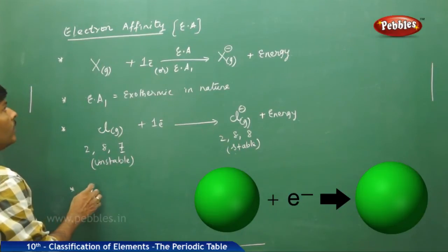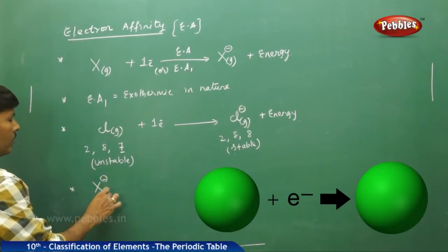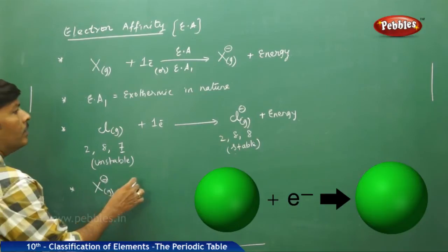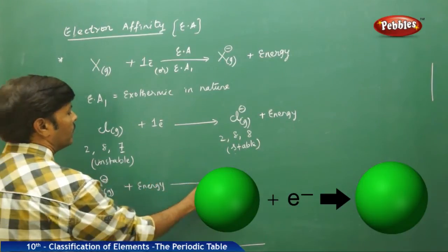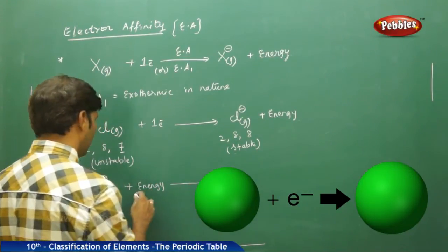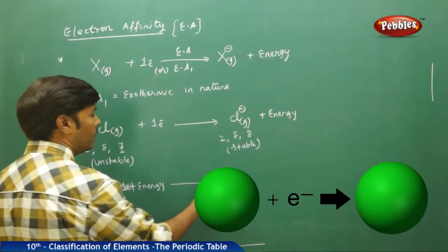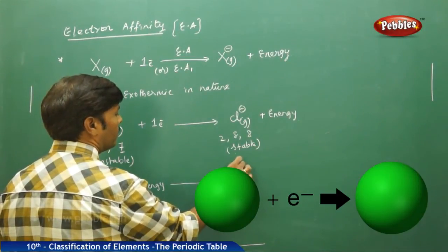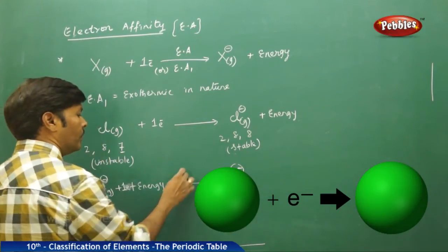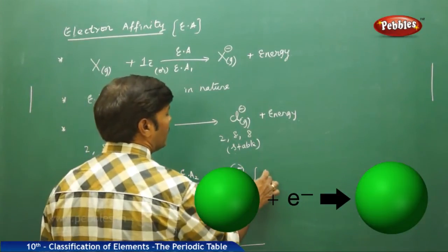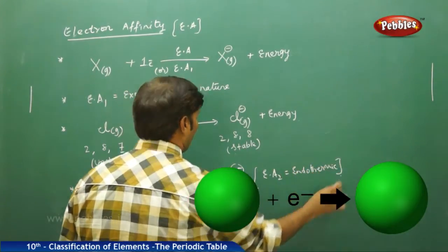Electron affinity two: you take the uninegative gaseous ion which is already stable. If you are adding energy on the reactant side, it gains an electron and it absorbs energy to form a dinegative gaseous ion. So electron affinity two is always endothermic.